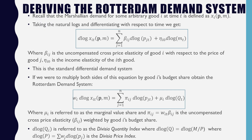Recall that the Marshallian demand for some arbitrary good i at time t is defined as x as a function of prices and income. Taking the natural logs and differentiating with respect to time, we get the following, where beta_ij is the uncompensated price elasticity of good i with respect to good j, and eta_i0 is the income elasticity of the ith good. This is the standard differential demand system.